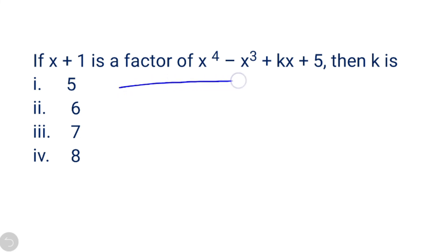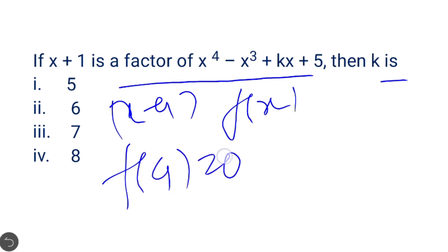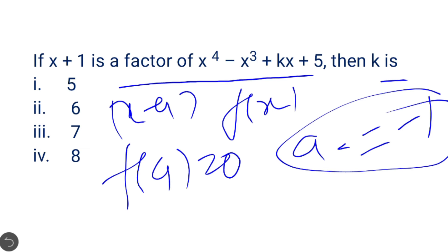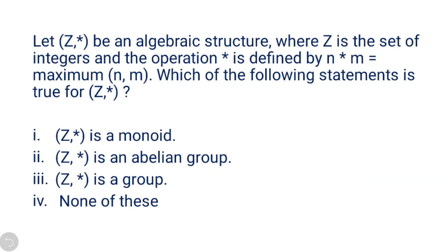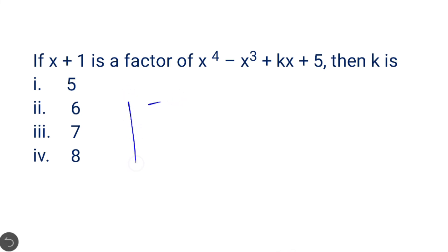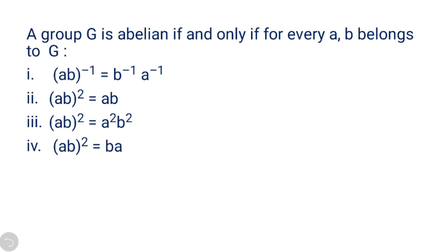Next question: if (x + 1) is a factor of x⁴ − x³ + kx + 5, find the value of k. By the factor theorem, if (x − a) is a factor of f(x) then f(a) = 0. Here a = −1. Substituting x = −1: (−1)⁴ − (−1)³ + k(−1) + 5 = 0, which gives 1 + 1 − k + 5 = 0, so k = 7. The correct answer is option 3.